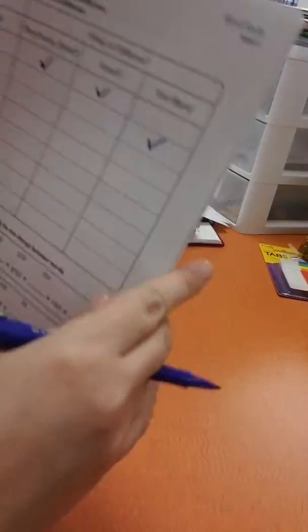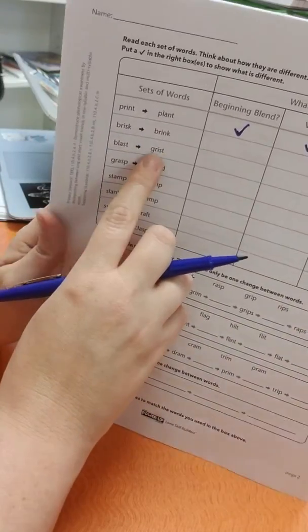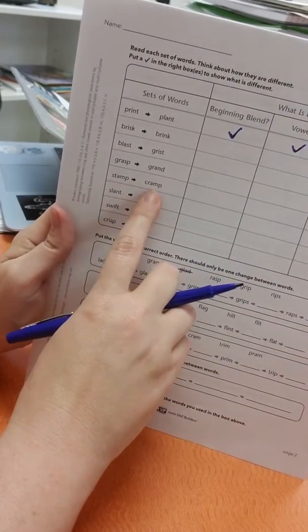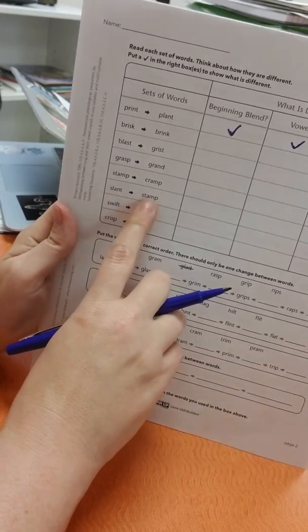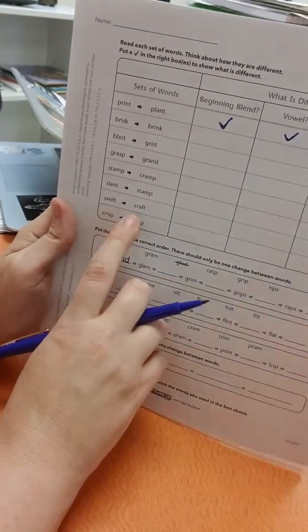So you're going to go through and do that for all of these. You have blast, grist, grasp, grand, stamp, cramp, slant, stamp, swift, craft, crisp, clasp.